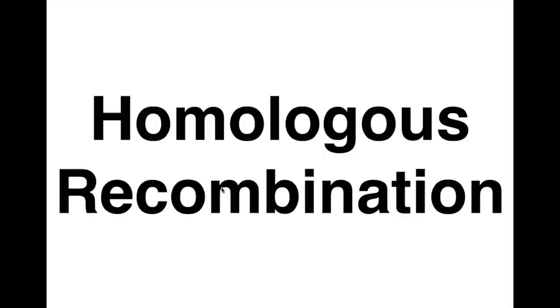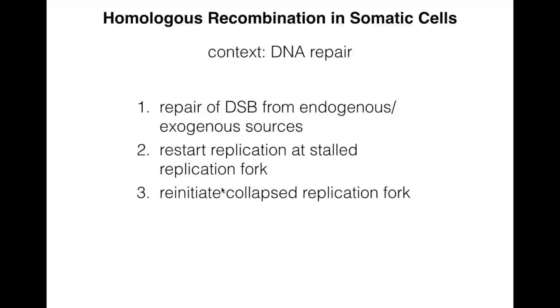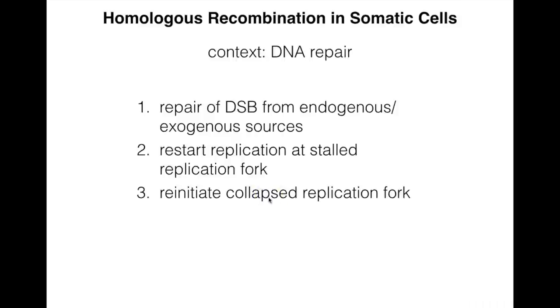The genetic diversity produced by homologous recombination is important at chromosomal segregation at meiosis I. But we're going to gloss over that and think about how this fits with our previous discussions of DNA damage repair. When we think about homologous recombination in somatic cells, we think a lot in the context of DNA repair — for instance, the repair of double-stranded breaks from endogenous or exogenous sources. There are enzymes and chemicals that can cause these double-stranded breaks. It can also be used to restart the replication fork when it's stalled or when it collapses.